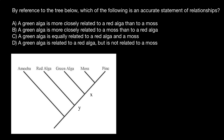The first variant would be: a green alga is more closely related to red alga than to moss. Let's check other statements as well. Another variant: a green alga is more closely related to a moss than to red alga. And another variant: a green alga is equally related to a red alga and moss.